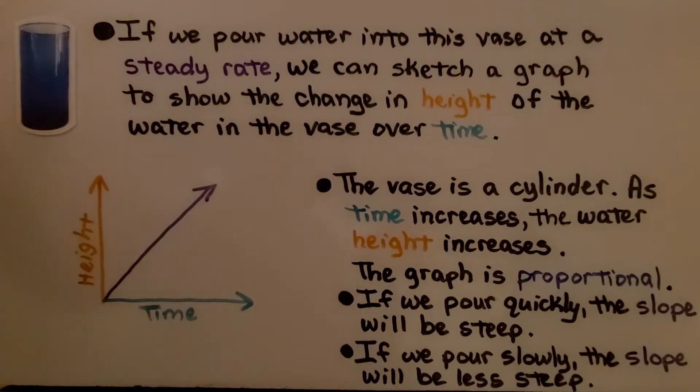Take a look at this. We have a blue vase. If we pour water into this vase at a steady rate, we can sketch a graph to show the change in height of the water over time. This vase is a cylinder with straight sides. As the water goes in, it's going to go in at a steady pace.